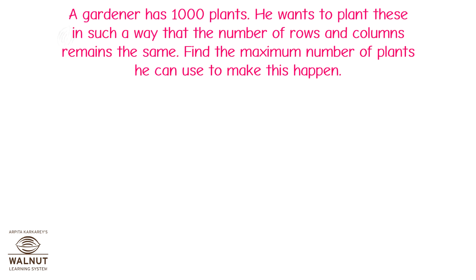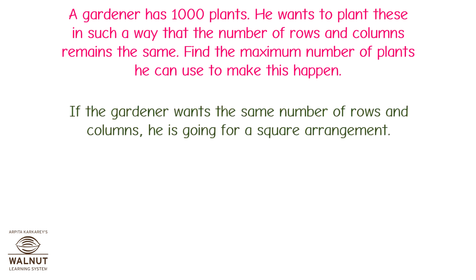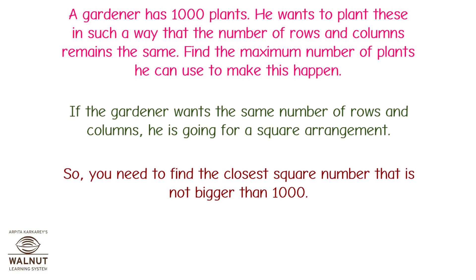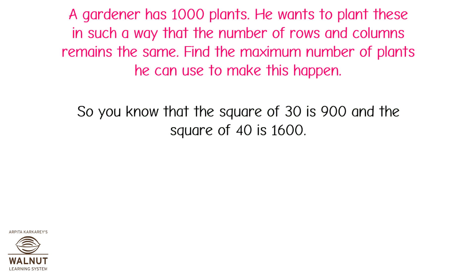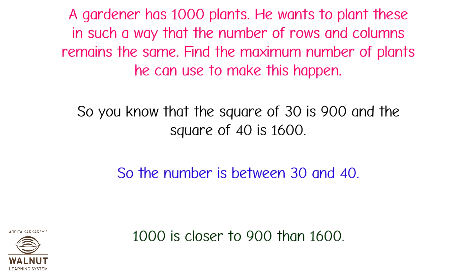A gardener has 1000 plants. He wants to plant these in such a way that the number of rows and columns remains the same. Find the maximum number of plants he can use to make this happen. If the gardener wants the same number of rows and columns, he is going for a square arrangement. So you need to find the closest square number that is not bigger than 1000. The square of 30 is 900 and the square of 40 is 1600, so the number is between 30 and 40.